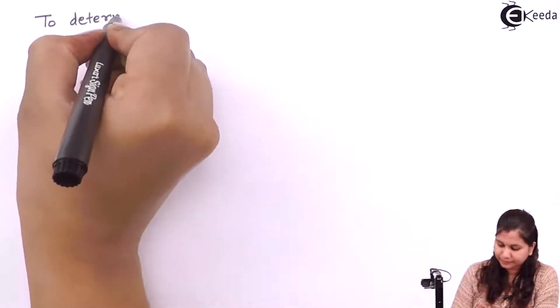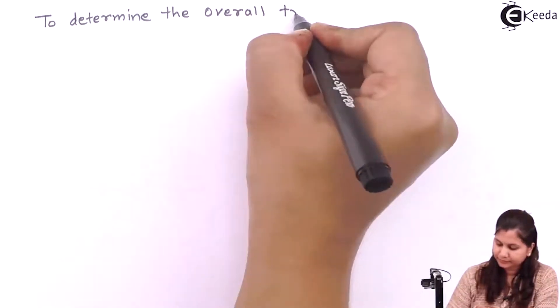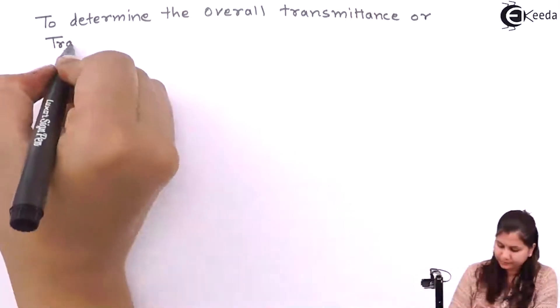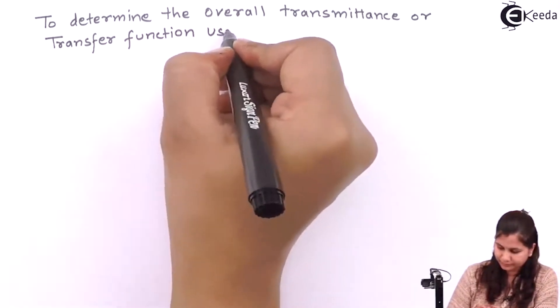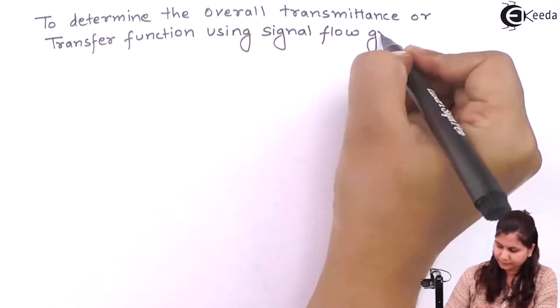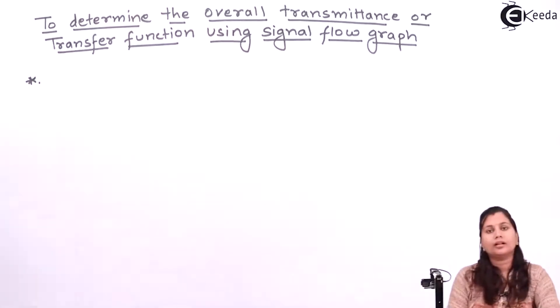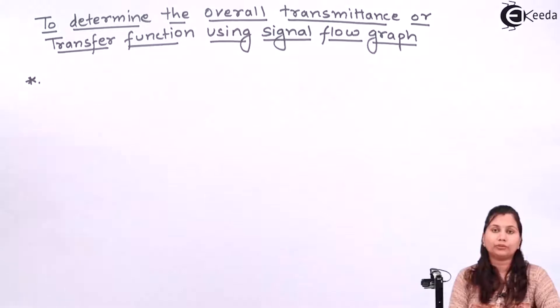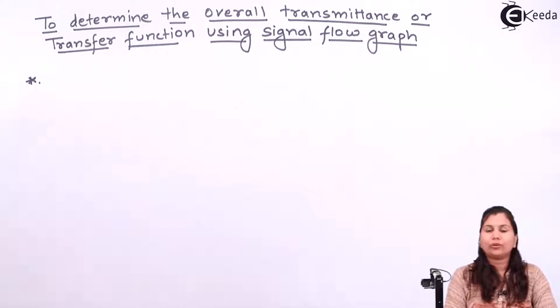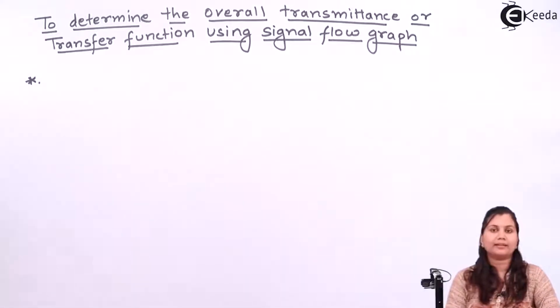Hello friends. In this video we are going to study how we can determine the overall transmittance or transfer function of a control system using the signal flow graph. The overall transfer function between the source node and the sink node, that is the input node and the output node, is given by the Mason's gain formula.